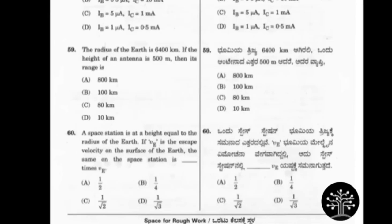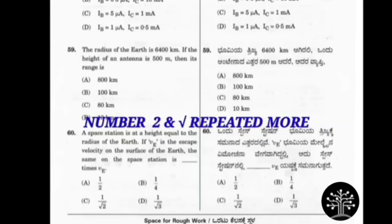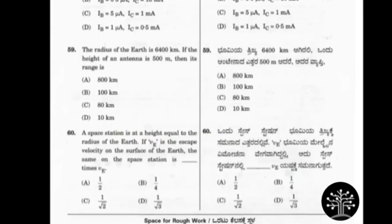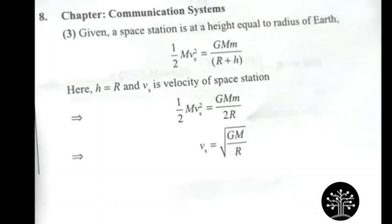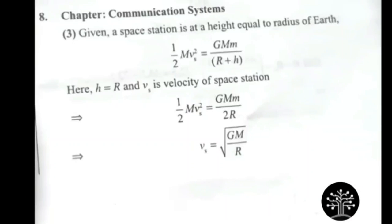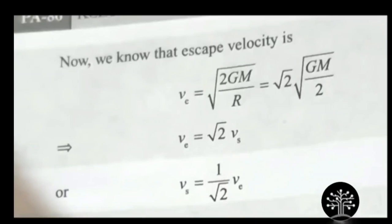The digit 2 is repeated in other options, and the term root is also repeated. Option D has root 3, option C has root 2 — root is common, and 2 is also common, so both things support root 2 as the answer. According to that, option C — which is 1 by root 2 — is correct. As I said, learn the concepts first and then use the tricks. This is from Communication Systems, solved without studying using only a trick.